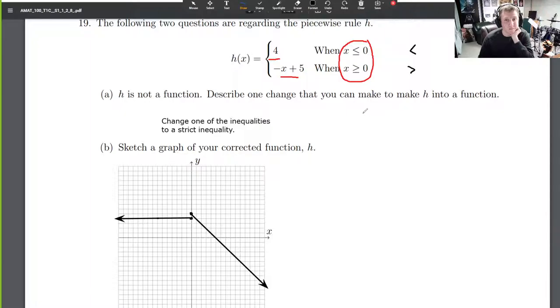You could change the second rule to negative x plus 4. What does that do? It shifts your graph on the right side down 1, so it would now look like this one. Is that a function? Yes it is, because now when we plug in zero, what do we get? We get 4 for both rules, but they both agree, so we only get one output—we get 4.